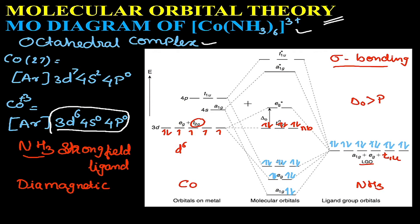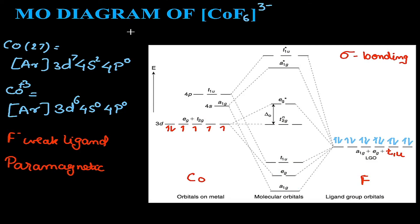This is the final MO diagram of Co(NH3)6^3+. With ammonia being a strong field ligand, the complex is a low spin complex. Since all electrons are paired and there are no unpaired electrons, the complex is a diamagnetic complex.